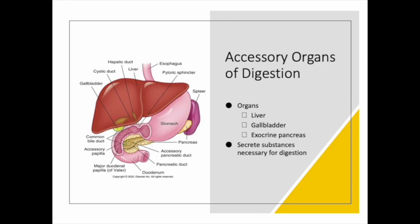The liver produces bile — containing bile salts — necessary for fat digestion and absorption. Between meals, bile is stored in the gallbladder and secreted when needed. The exocrine pancreas produces enzymes to complete digestion of carbohydrates, proteins, and fats, as well as an alkaline fluid that neutralizes chyme to create a pH in the duodenum that supports enzymatic actions. The liver also receives nutrients absorbed by the small intestines, metabolizes or synthesizes them into forms that can be absorbed by the body cells, and can release nutrients into the bloodstream or store them for later.